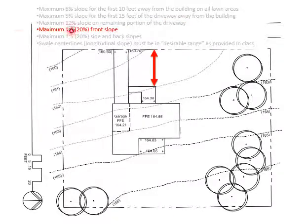Fourth standard says you're allowed a maximum of 20%, otherwise a 1 to 5 slope along the front slope. This is the same slope that you did on your terrace exercise. So you already know how far apart these contours are allowed to be. Note, this is a maximum, not a minimum.